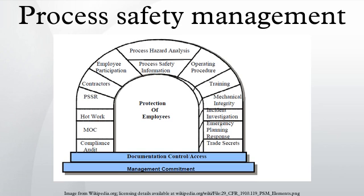Information pertaining to the equipment in the process should include: materials of construction, piping and instrument diagrams, electrical classification, relief system design, ventilation system design, design codes and standards employed, material and energy balances for processes built after May 26, 1992, and safety systems.